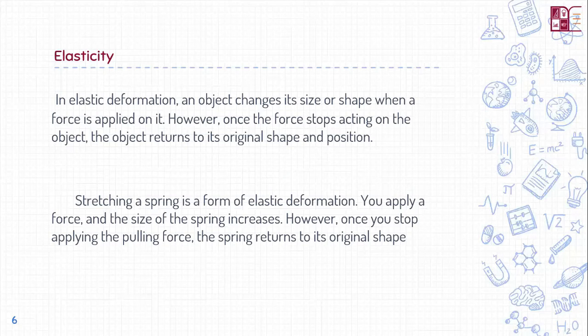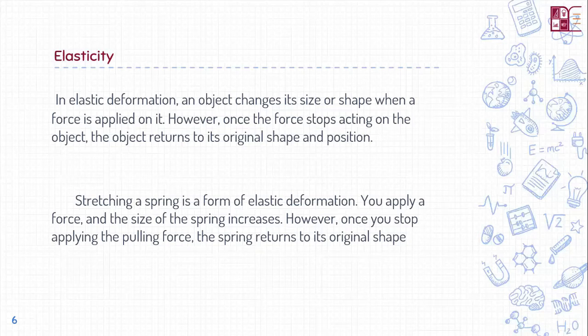Rubber bands are a common example — they are very elastic. When you stretch them they return back to their original position and can regain their shape. Elasticity means that when you apply a force to the object it stretches, but when you release that force it returns to its original shape, holding all its original properties.